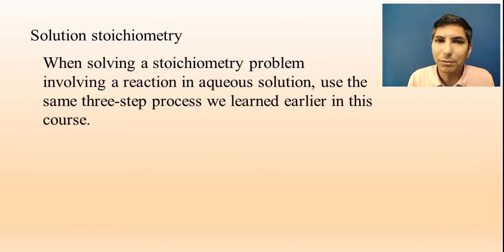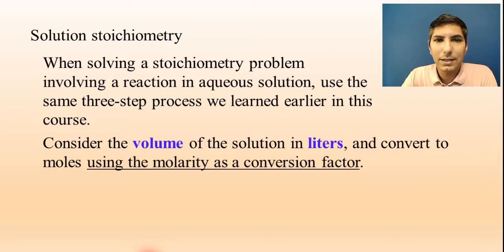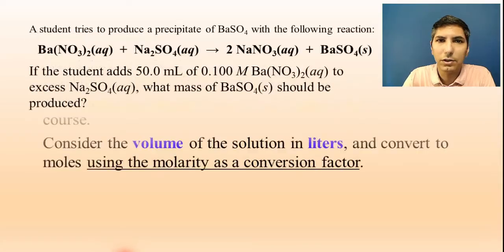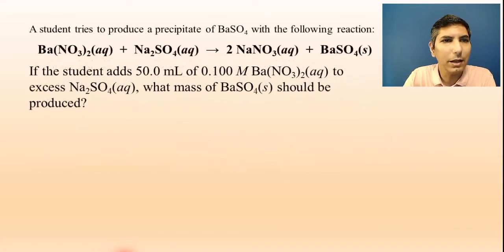We're going to use the same three-step process that we learned in an earlier video, where step one is convert to moles, step two is use a mole ratio using the coefficients of the balanced equation, and the third step is to convert to our final unit, which might be grams or something else. The only real difference here is that at the beginning, we're going to consider the volume of the solution in liters, and when we do step one, which is convert to moles, we're going to use molarity as the conversion factor. I'll show you how this works. It's actually quite simple.